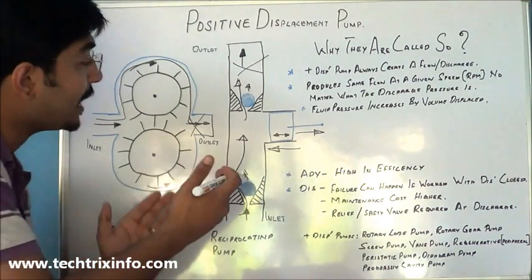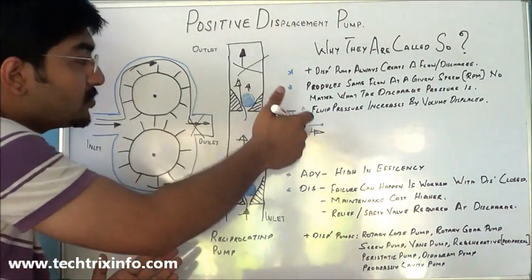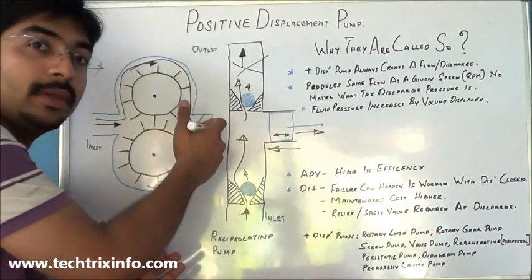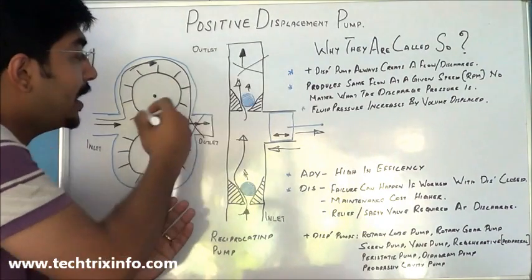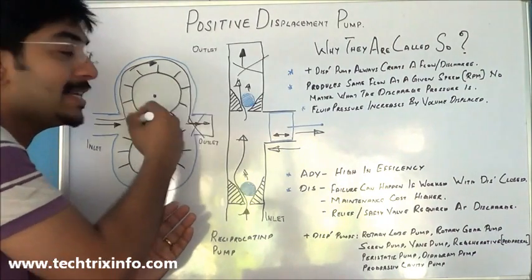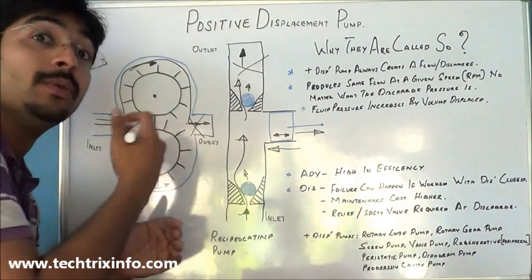Even if the discharge is closed, the pump will continue creating a flow or discharge, which is why a safety valve is essential.